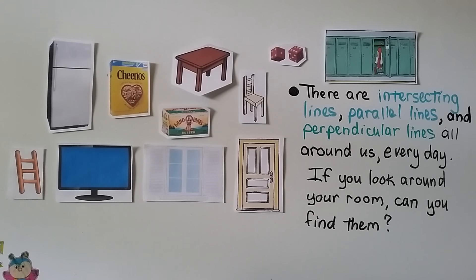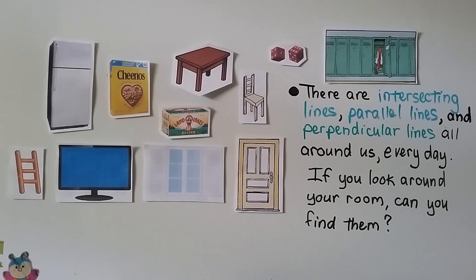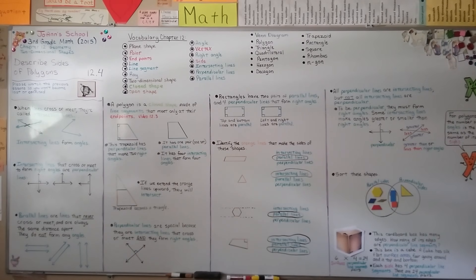There are intersecting lines, parallel lines, and perpendicular lines all around us every day. If you look around your room, your classroom, your home, or even outside, you can find them — they're everywhere. In our next lesson, 12.5, we're going to classify different quadrilaterals.